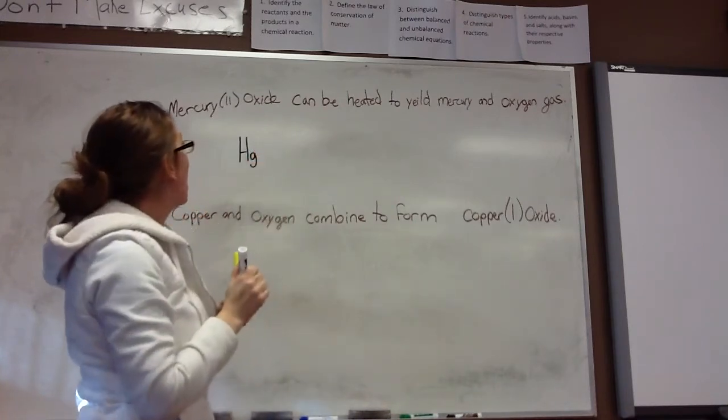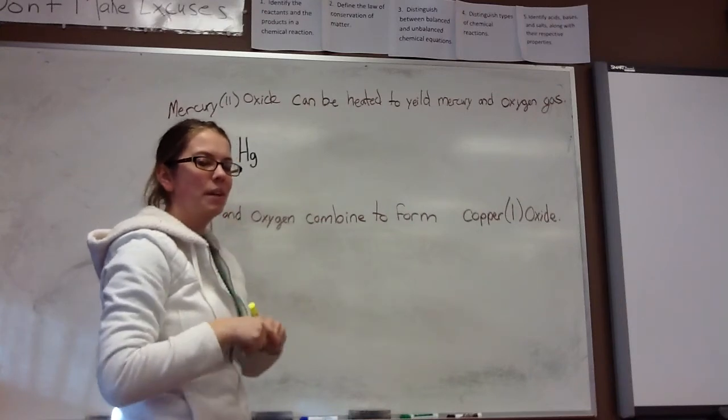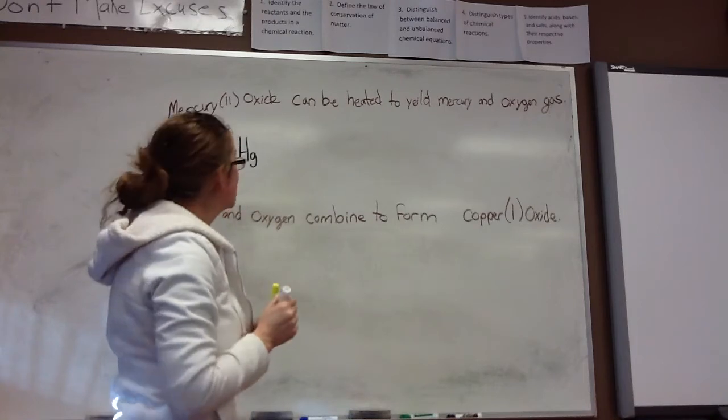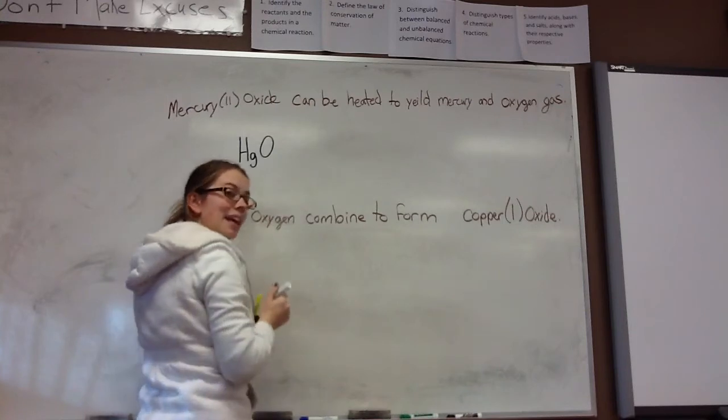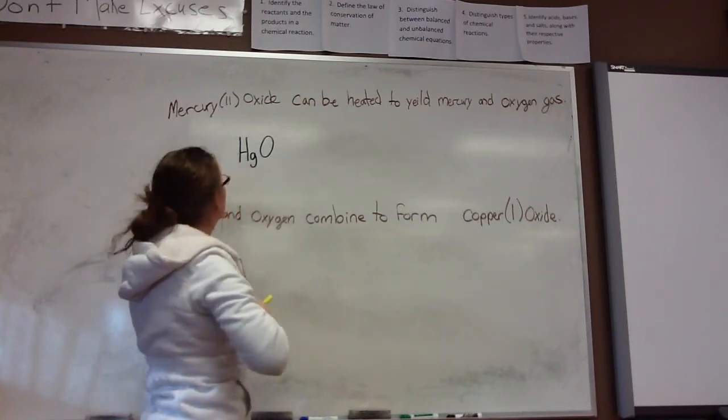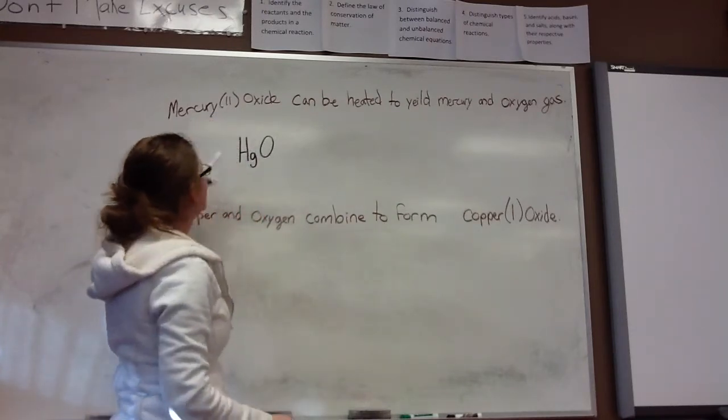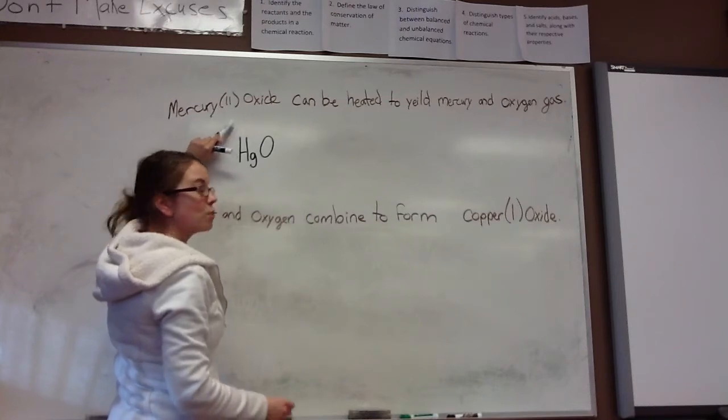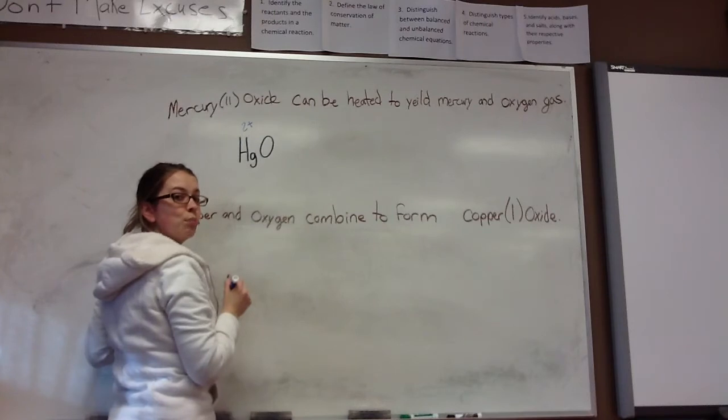And oxide, remember when it's a single monoatomic element, we add that D-E ending, so oxide must be oxygen. And let's make sure that this is the correct ratio of mercury to oxygen in our formula. To figure that out, we can look at the charge of mercury, which because it's a transition metal is written as a Roman numeral. That says 2+.